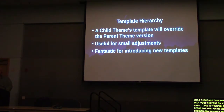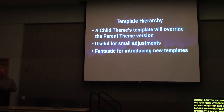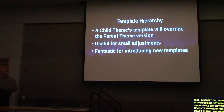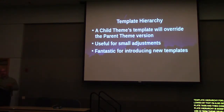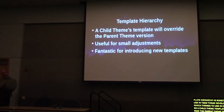We're going to go into template hierarchy, followed by template tags and conditional tags. Template hierarchy is something WordPress uses in theme development to tell WordPress which templates to use during certain circumstances. A child theme's template will always override the parent theme's template. So if you have a page.php file in your child theme, it will override the page.php in the parent theme. This is extremely useful for making small adjustments — copying page.php and adding code for an Advanced Custom Fields plugin, additional menus, or whatever you need for your project.